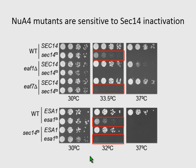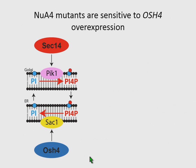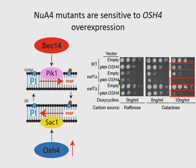For the second screen, we looked at the effect of overexpressing OSH4. OSH4 is a functional antagonist of SEC14. When you overexpress OSH4, it activates the phosphatase SAC1 and depletes PI4P levels, which also creates a toxic effect on growth. When I overexpressed OSH4 through a doxycycline-inducible promoter, NeoA4 mutants also had this synthetic dosage lethality phenotype, very similar to what we found when we inactivated SEC14.